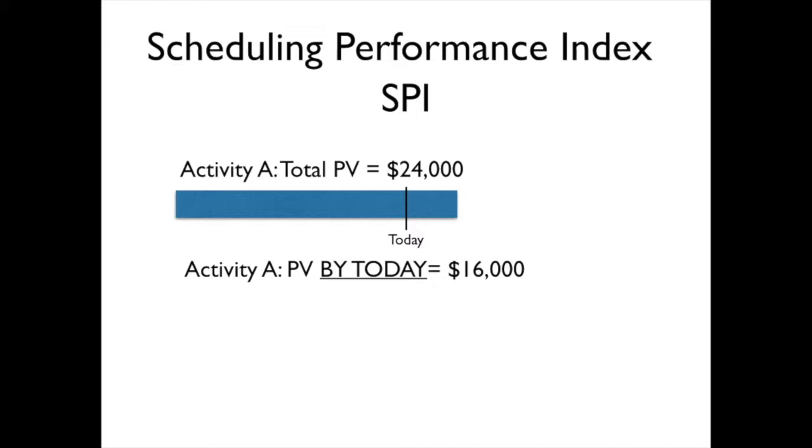That's important because we're looking at this from the standpoint of schedule. So now let's calculate the earned value. The earned value is calculated the same way we did before. Let's say that we have 50% of this particular task is done. So we're going to take the total planned value times 50% and get $12,000.